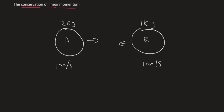You must choose a direction as positive. So let's assume that right is positive. Then what would the total momentum of the system be before the collision?